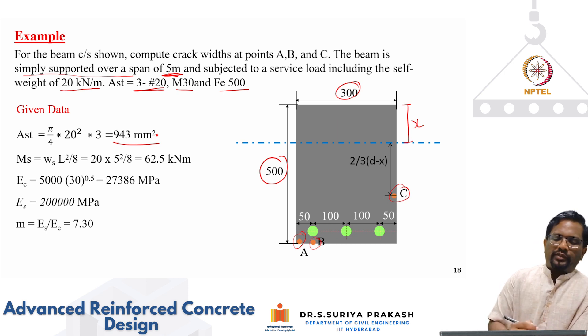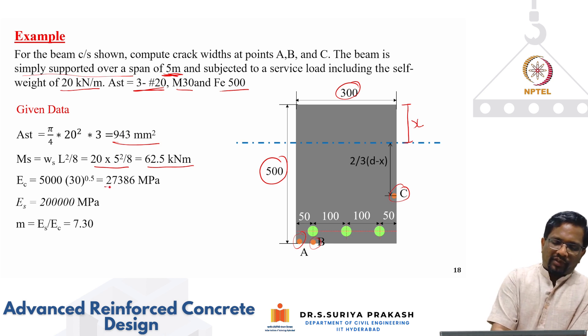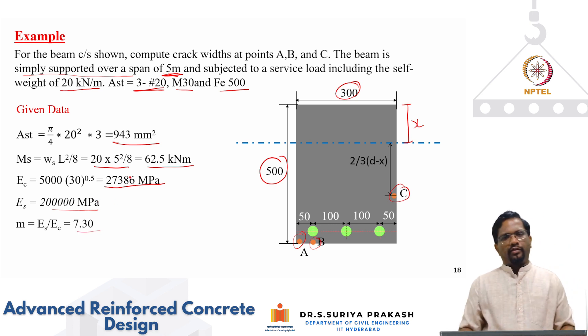Service moment is WL square by 8, 20 into 5 square by 8, which is 62.5 kN-m. And elastic modulus of concrete, 5000 square root of FCK, 27,386 megapascal. Elastic modulus of steel, 200 into 10 to the power of 3 megapascal. We have taken modulus ratio is Es by Ec. When you divide Es by Ec, you get a modular ratio of 7.30. These are the given data.